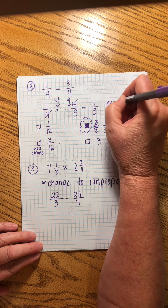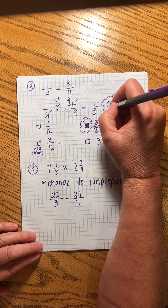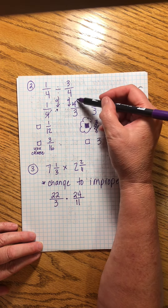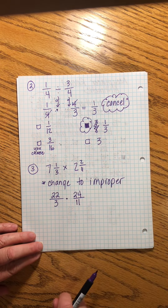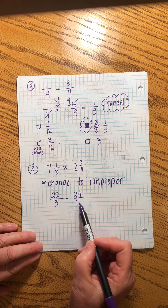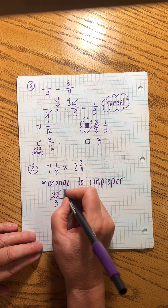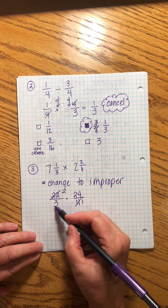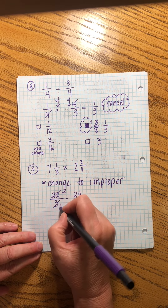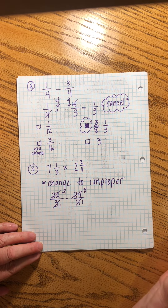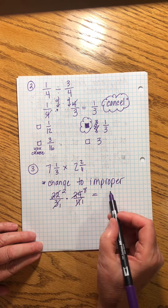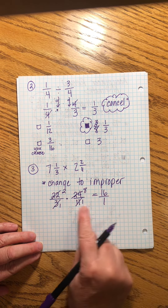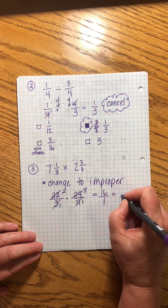Before multiplying, we cancel. With multiplication we can cancel any top against any bottom. 22 and 11: 11 goes into 22 twice and into 11 once. 3 and 24: 3 goes into 24 eight times and into 3 once. Now multiply straight across: 2 × 8 = 16 on top, 1 × 1 = 1 on the bottom. 16 over 1 is just 16.